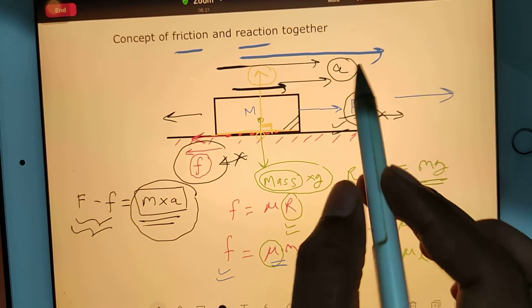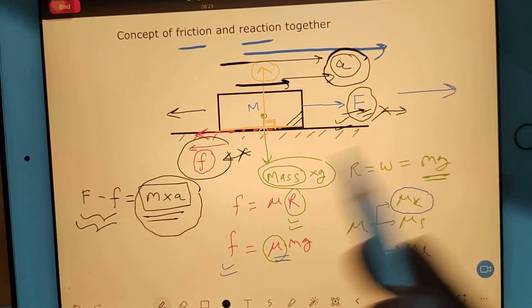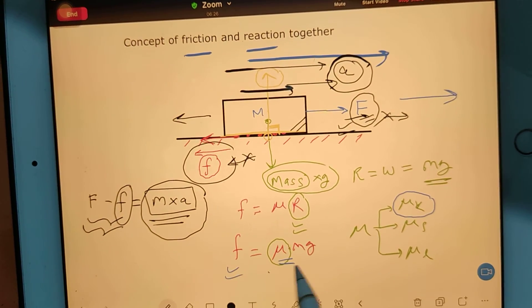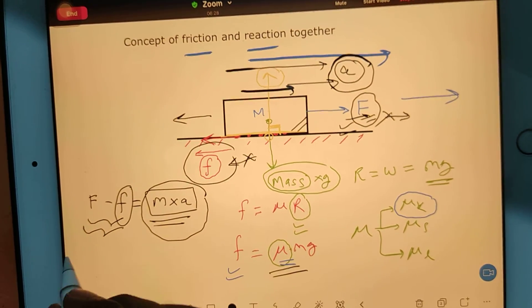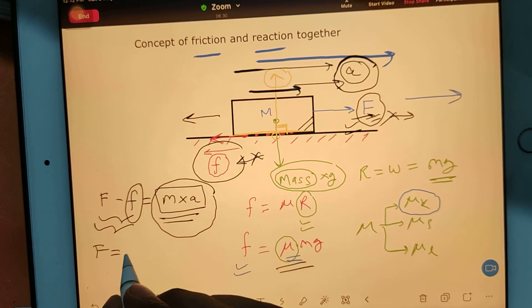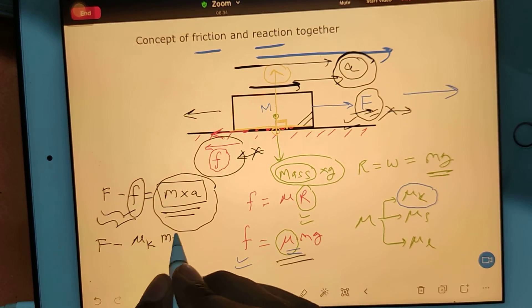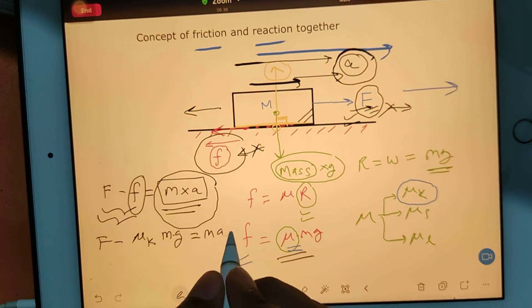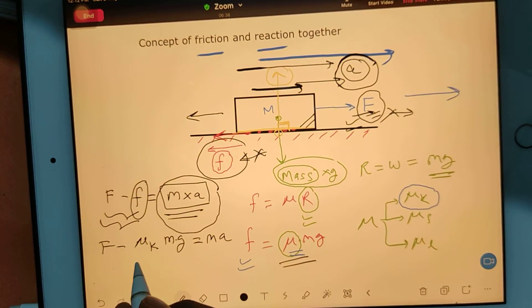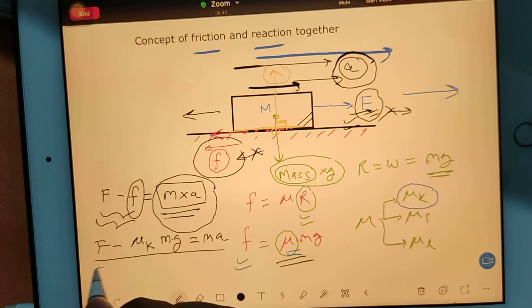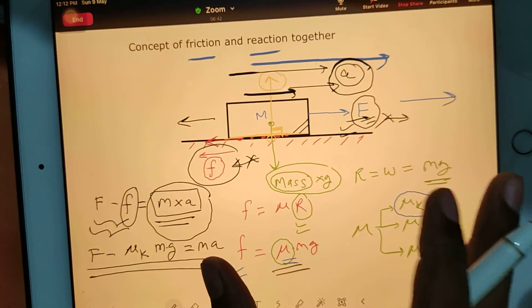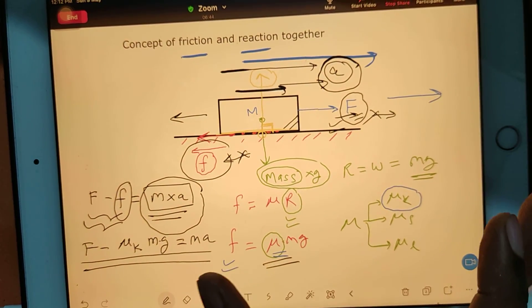Now this f we can replace with this. In that you will write F minus μₖmg equals ma. And you can rearrange this and find out whatever is there. So this will be your first idea when we combine friction and reaction in case of linear motion.